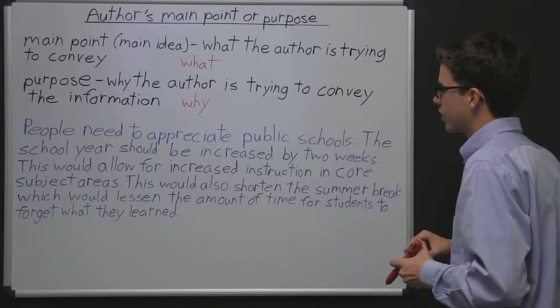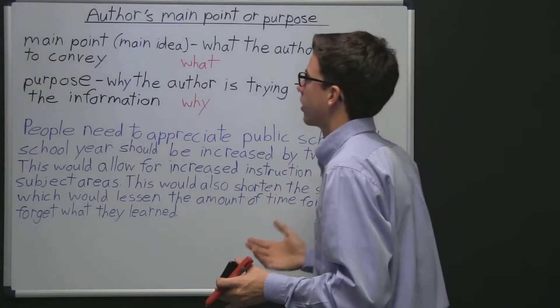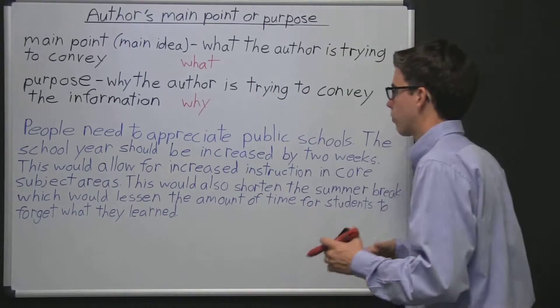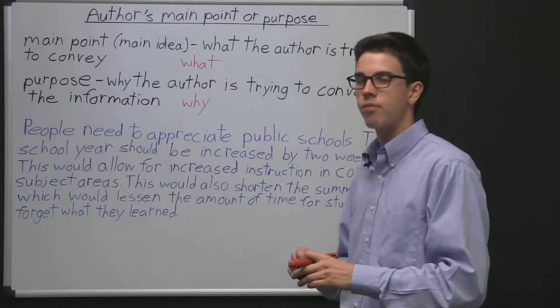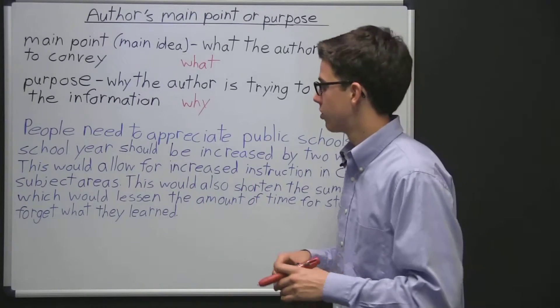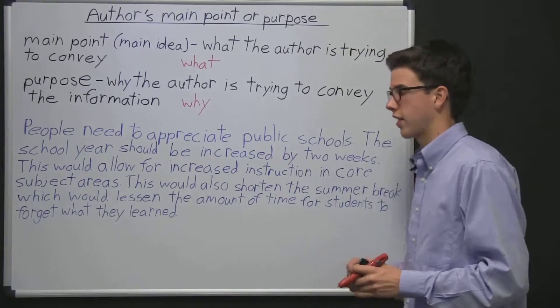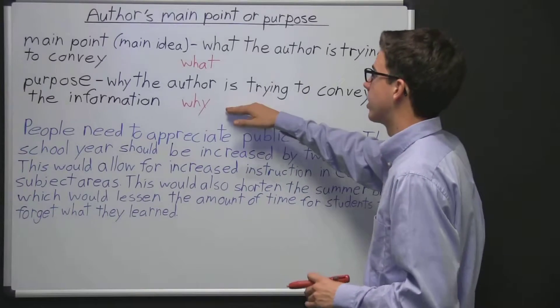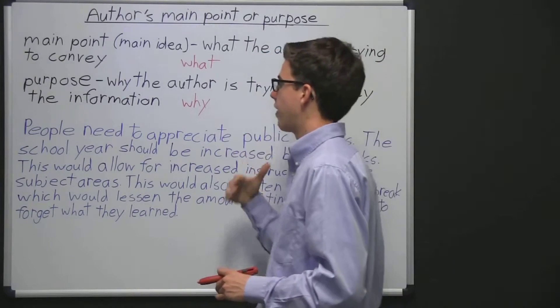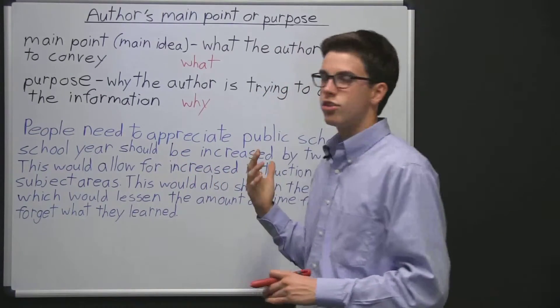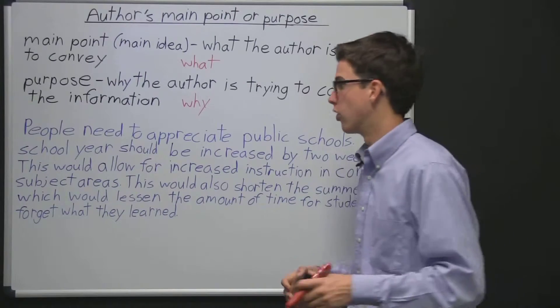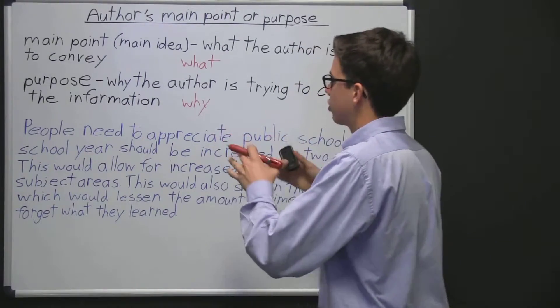So an example of this would be that an author's main point could be that yellow lights should be longer. And their premises for that, what backs up their belief about that, is that longer yellow lights will save lives through reduced traffic accidents. So the purpose here, the reason that the author would share this main point with you and the evidence behind it, is to make you also believe that yellow lights should be longer. That's just an elementary example of that.